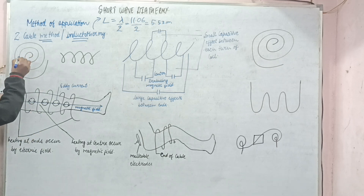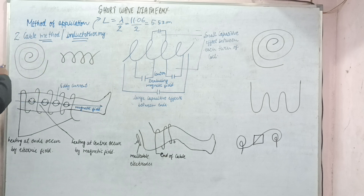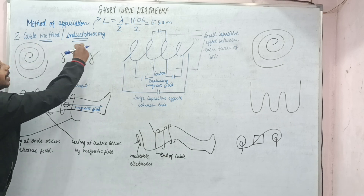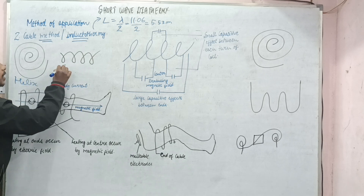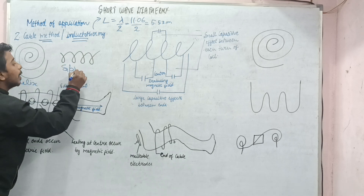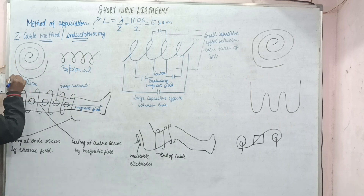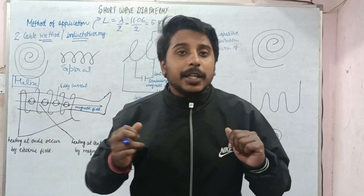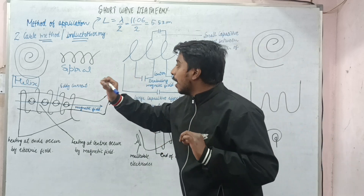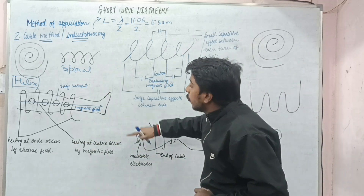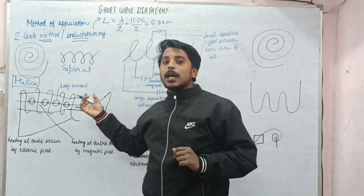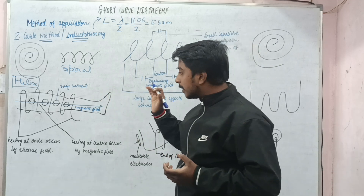That cable can either be placed as a helix or made into a spiral. The helix is used on flat areas such as our back, while the spiral is used for the limbs, mostly for the lower limb.